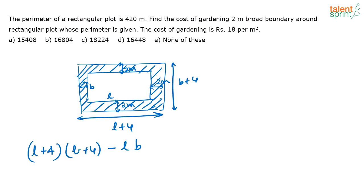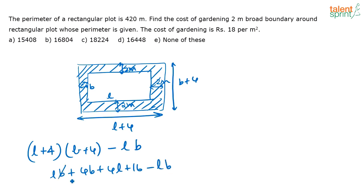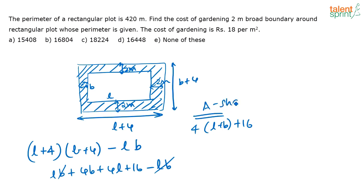Expanding (L+4) into (B+4) gives LB plus 4B plus 4L plus 16, minus LB. The LB terms cancel, so we are left with 4(L+B) plus 16. This is the area of the shaded region.